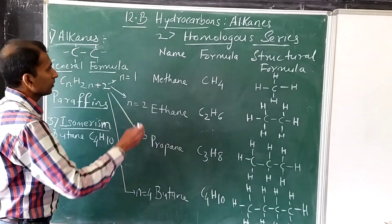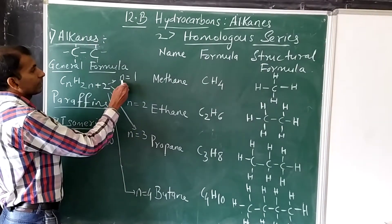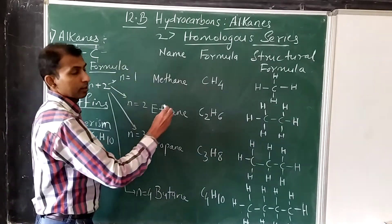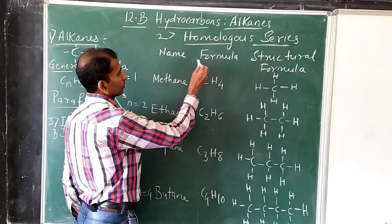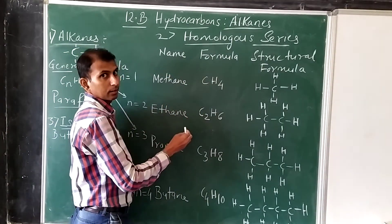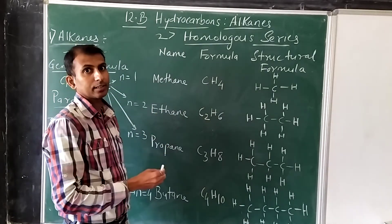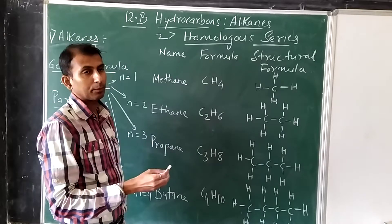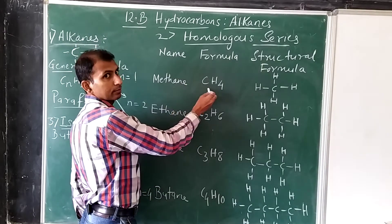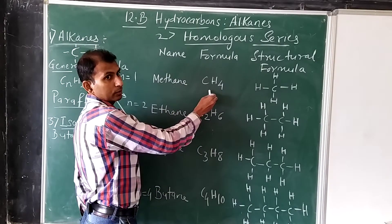When we substitute n equals 1 in this general formula, we get the first member in this homologous series, the first member of the alkanes family, that is methane.